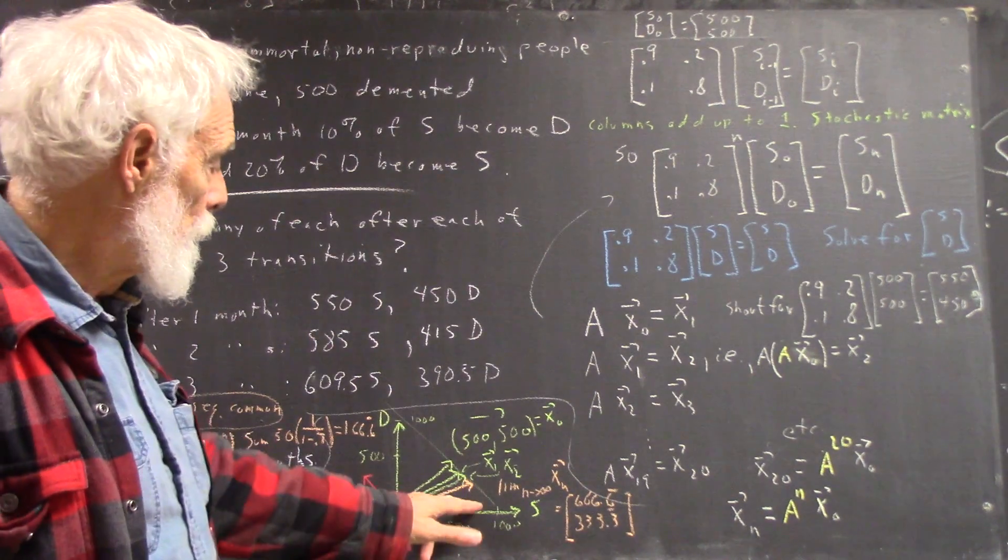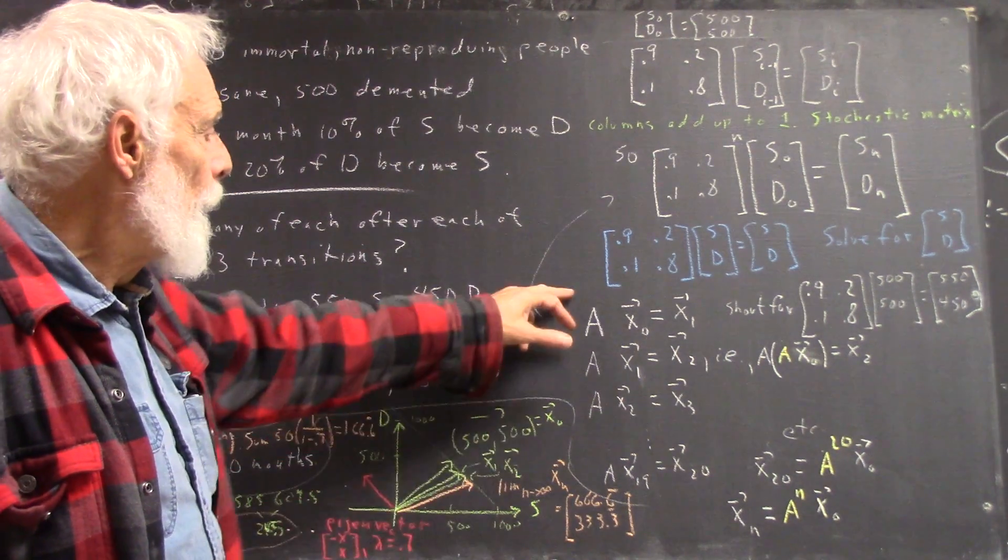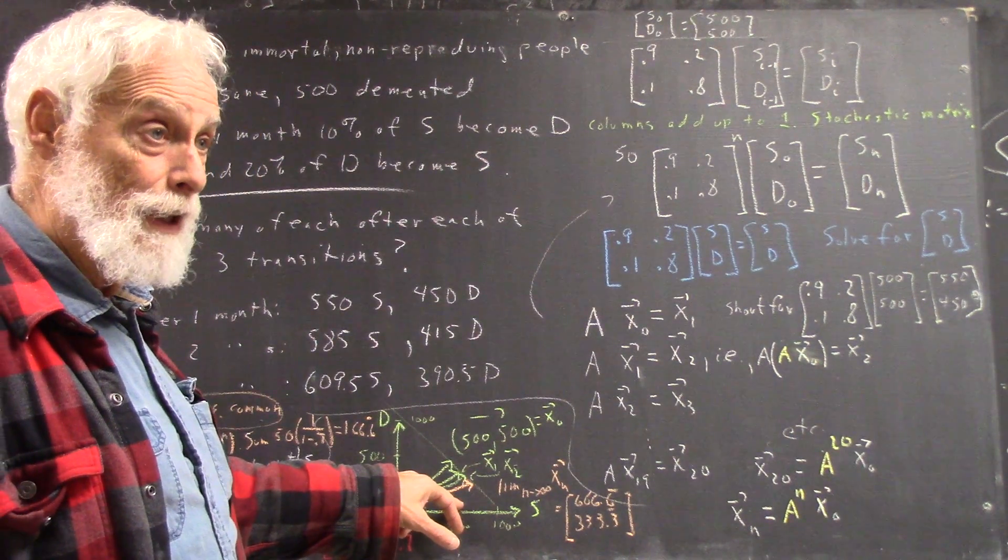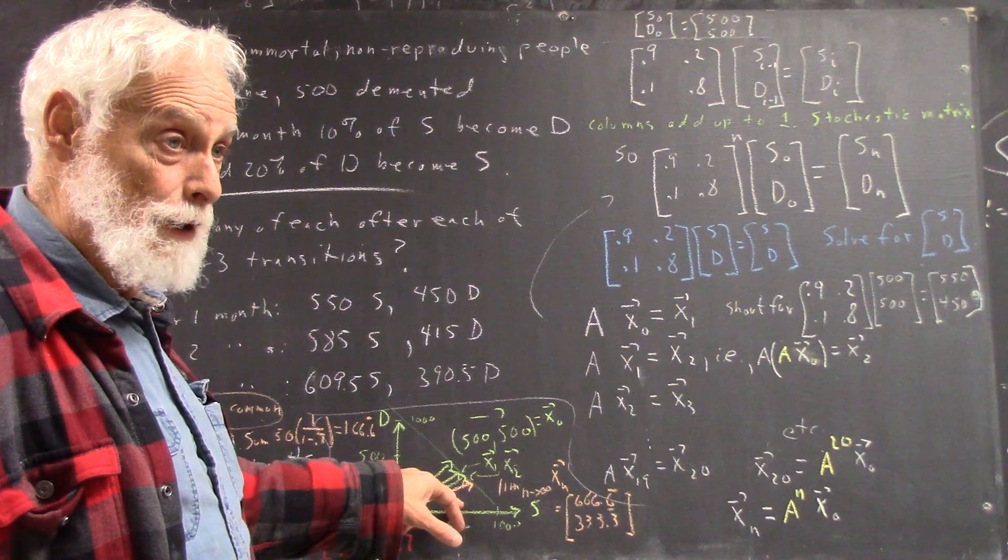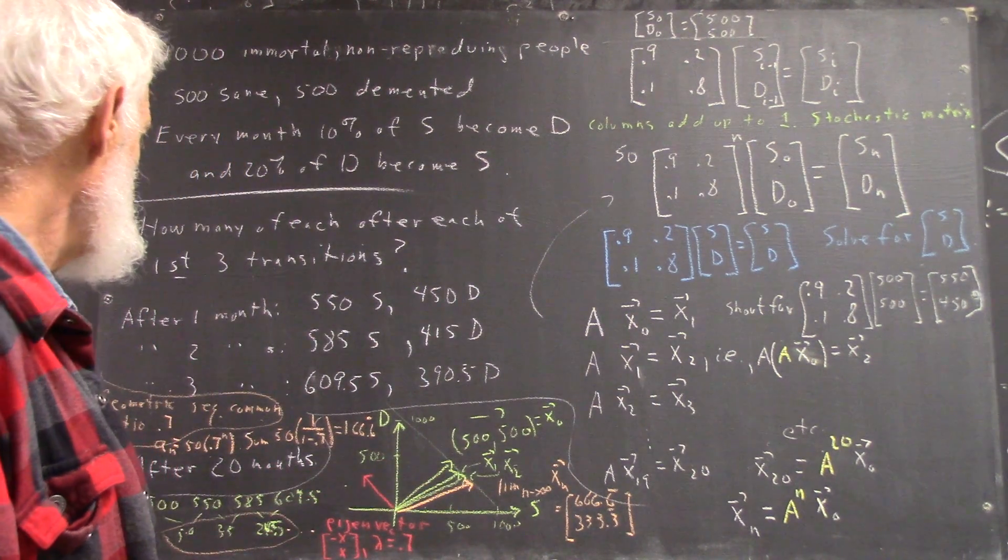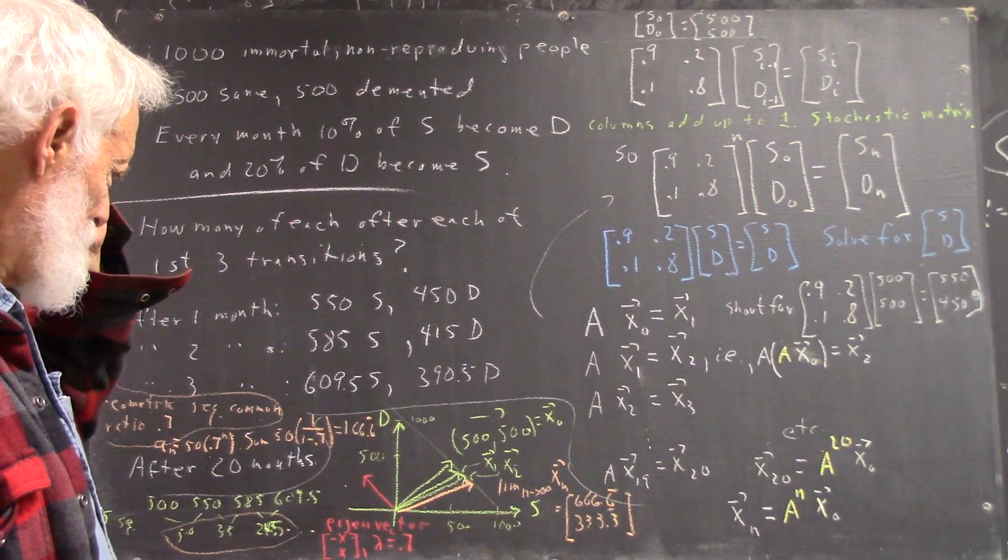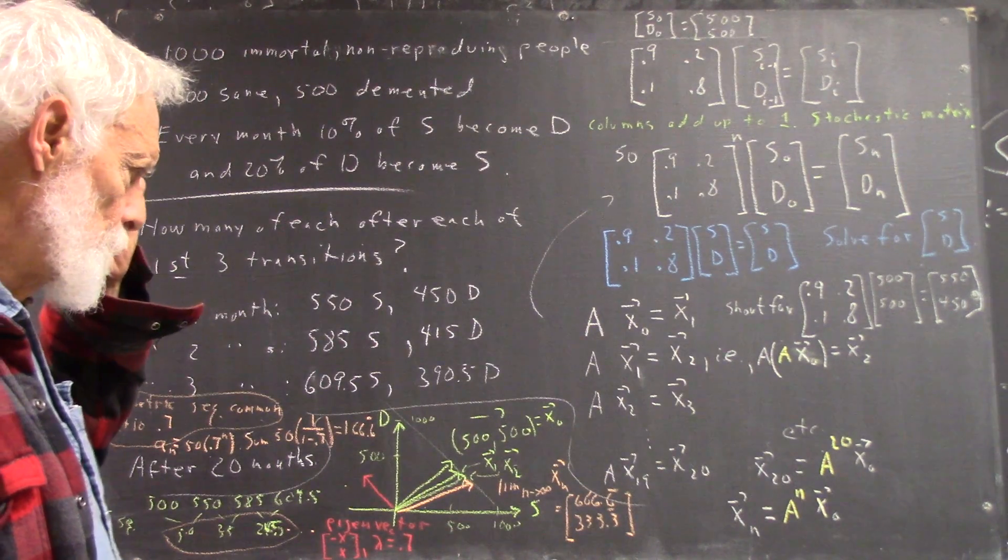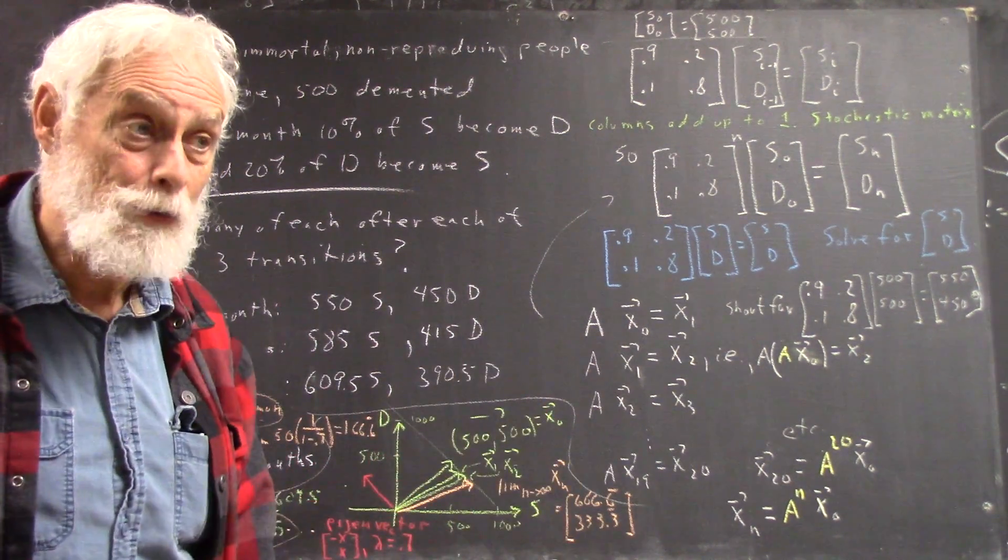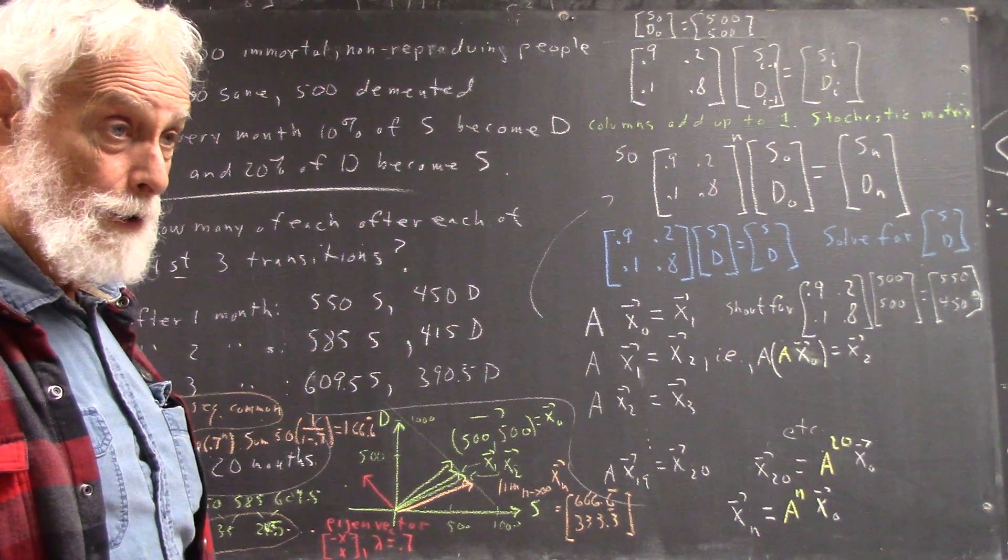And then you have another eigenvector. And when you take powers of this matrix, they approach the direction of that eigenvector, okay? So I'm probably going to throw a problem into the homework where we kind of review this. You can also go back and look at the original videos where we developed a lot of them, okay?